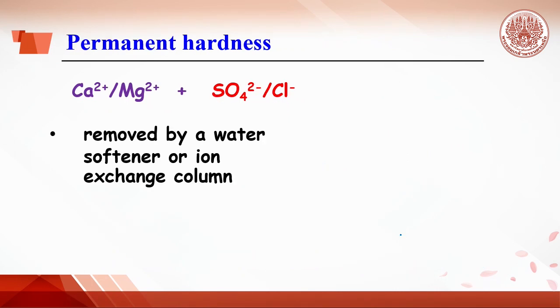Permanent hardness is caused by the presence of calcium together with other non-carbonate such as sulfate or chloride ion. Calcium sulfate or magnesium sulfate do not precipitate out as temperature increases. So the permanent hardness cannot be removed by boiling.